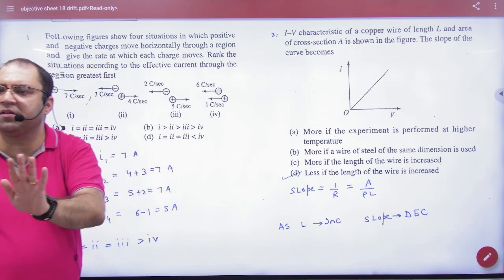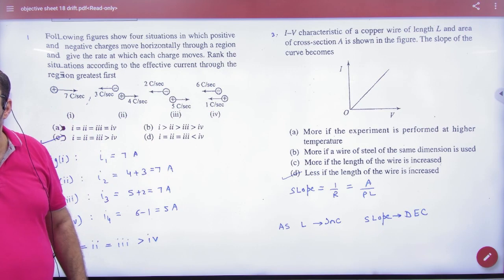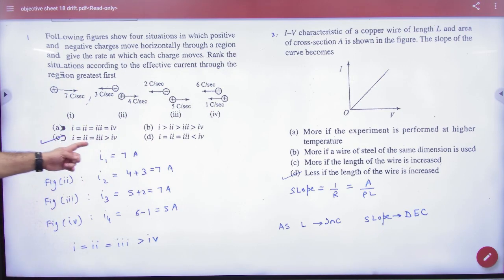Whenever we move the plus and minus charge, we have to do the current minus. So you have to mark the answer from here. 3 are equal and 1 is different.